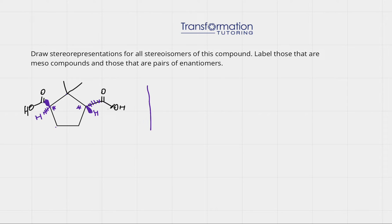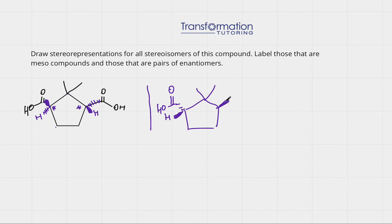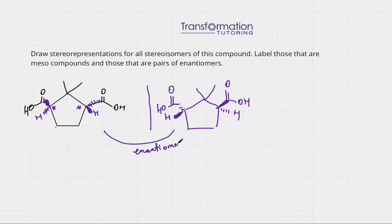Next I'm going to draw its mirror image. I'm going to draw a mirror here and draw literally a mirror image of my molecule — like you're looking in the mirror, what would you see? So I began with figuring out the chiral carbons, labeled them as wedges or dashes, and then drew a mirror image. The two mirror images are called enantiomers — non-superimposable mirror images.